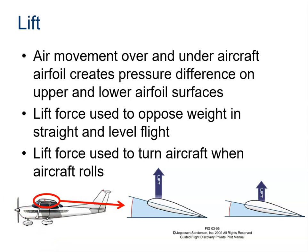To summarize what we know so far: lift is created by air moving over and under a wing, producing a pressure difference. The pressure on the underside of the wing is greater than on the upper part, and that's what creates lift. Lift opposes weight, and it can also be used to roll an aircraft. On this slide, the blue angle shown is called the angle of attack.